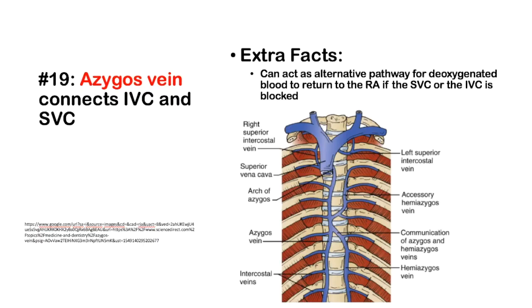Number 19: The azygous vein connects the inferior vena cava and the superior vena cava. It can act as an alternative pathway for deoxygenated blood returning to the right atrium. Essentially, if one of those vessels is blocked, the azygous vein provides a conduit for blood to still reach the right atrium.